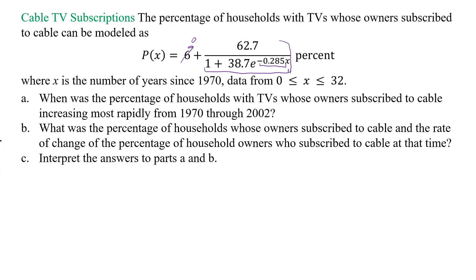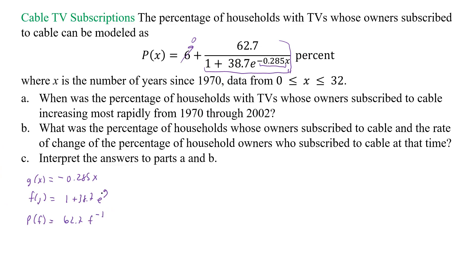Whatever we want to call it, it really doesn't matter. Maybe we can say g of x is equal to negative 0.285x, f of g equals 1 plus 38.7 e to the g, and now p of f is going to be 62.7 times f to the negative 1 — I'm just going to take that up and make it a negative 1, so it's easy to differentiate.